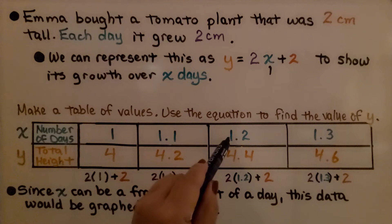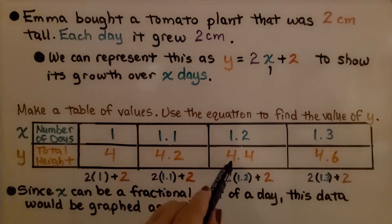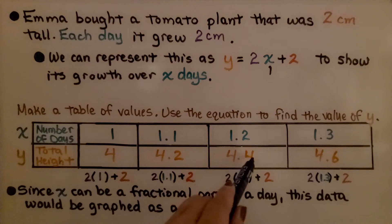If the number of days is 1.2, then its growth is 4.4, and so on. Since x can be a fractional part of a day, it's still growing. This data would be graphed as a line.